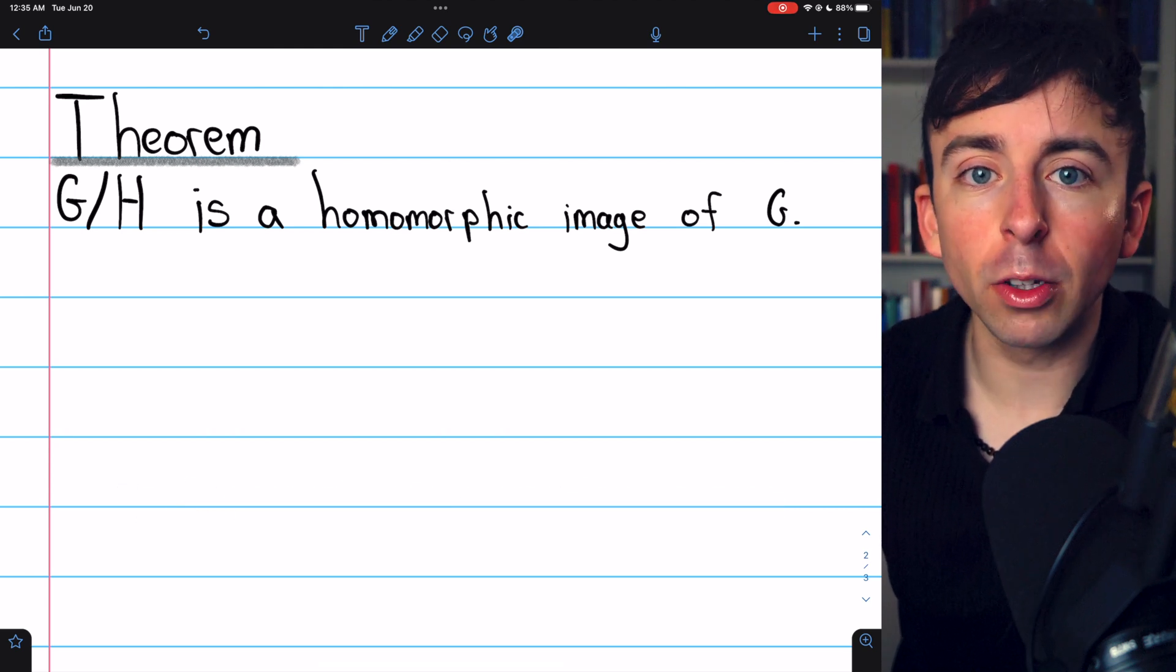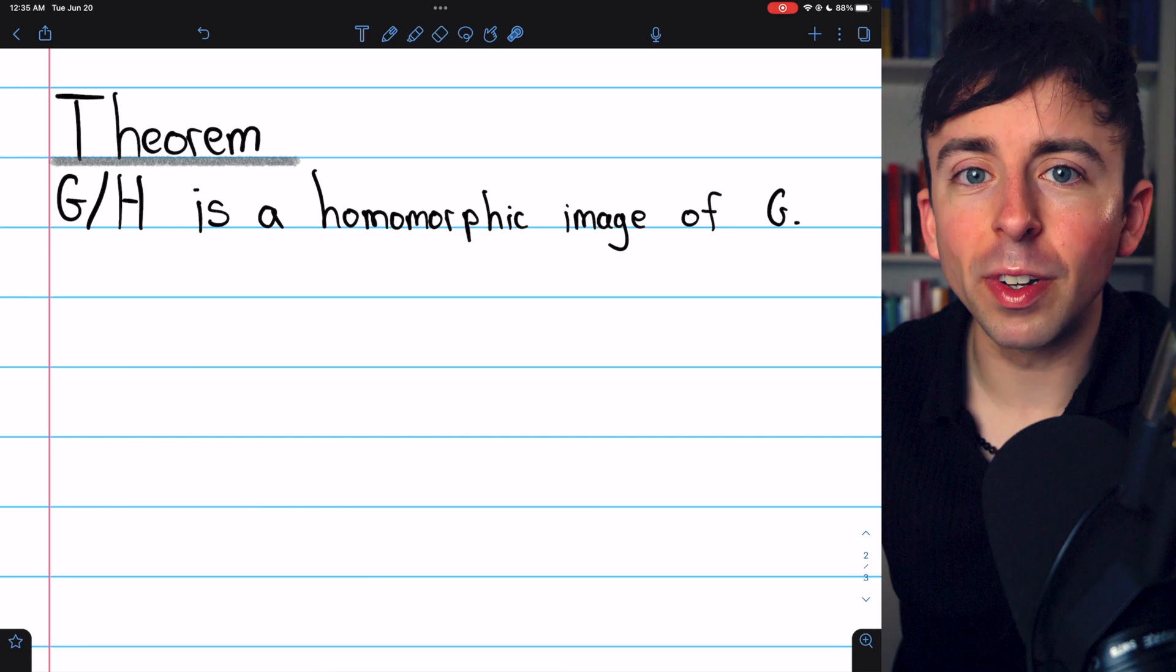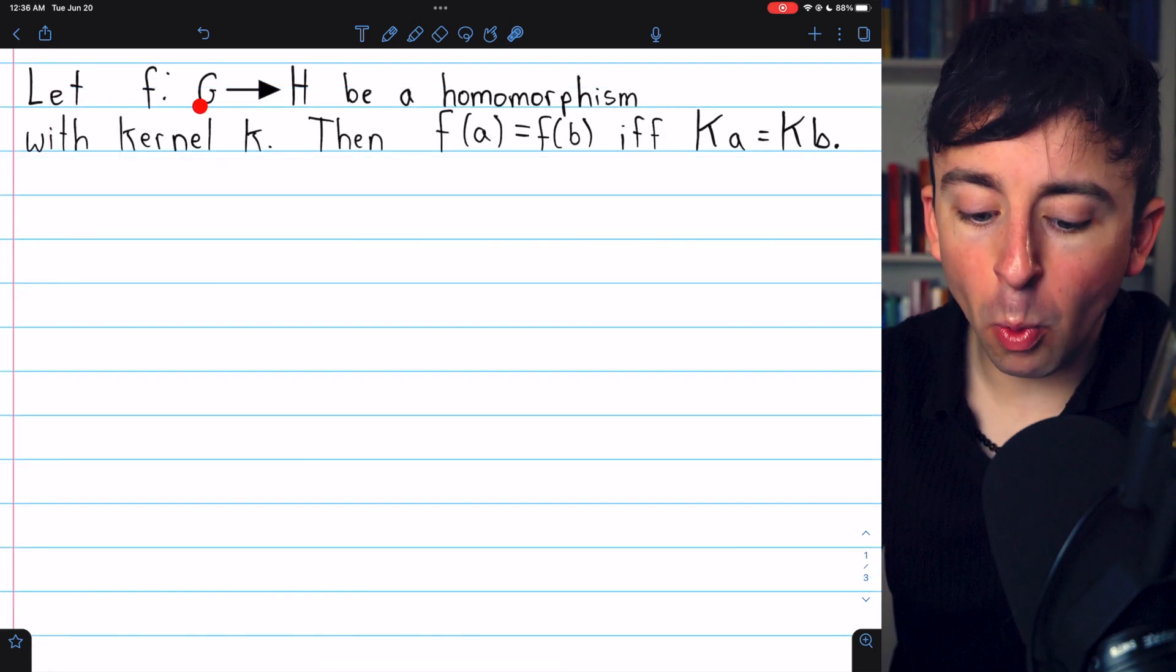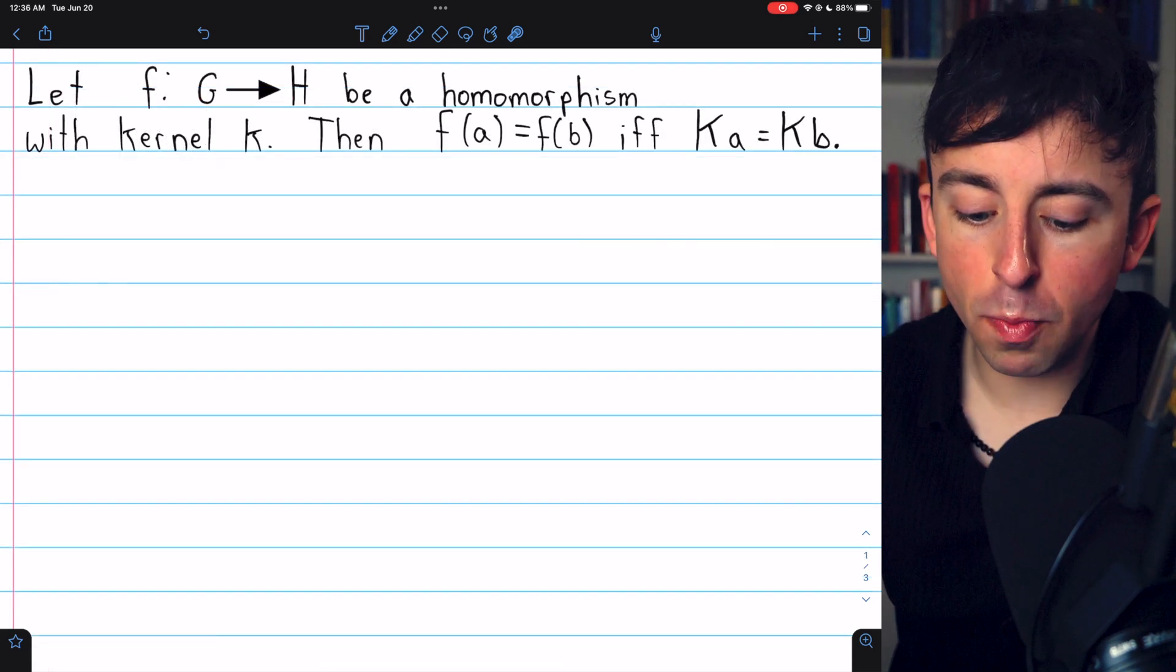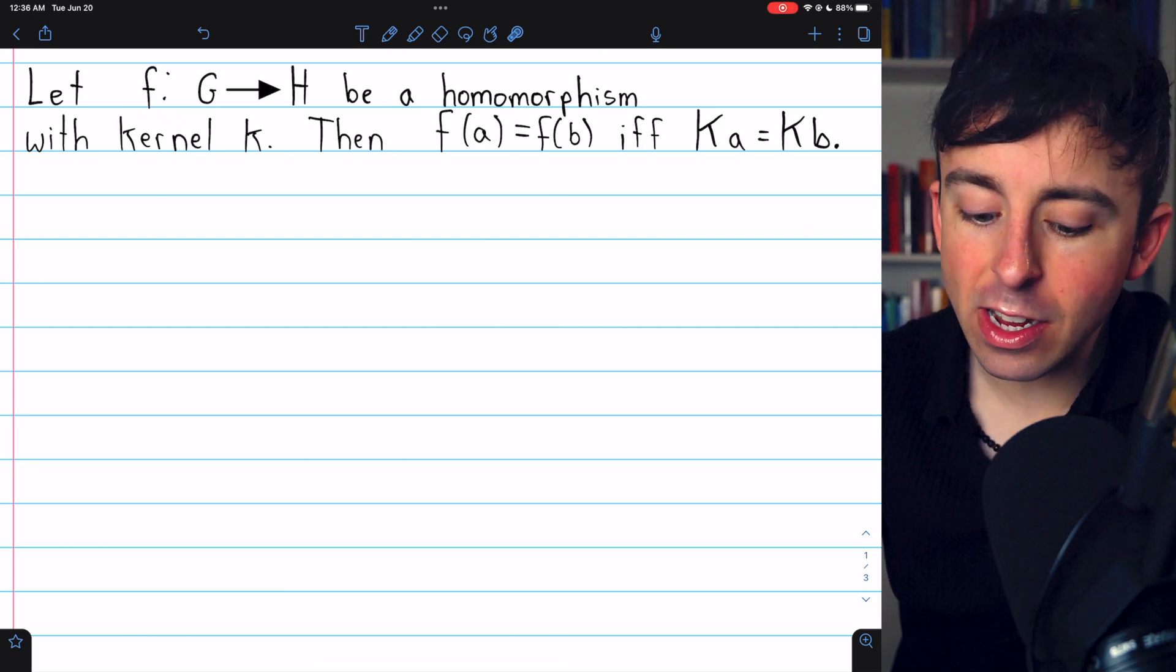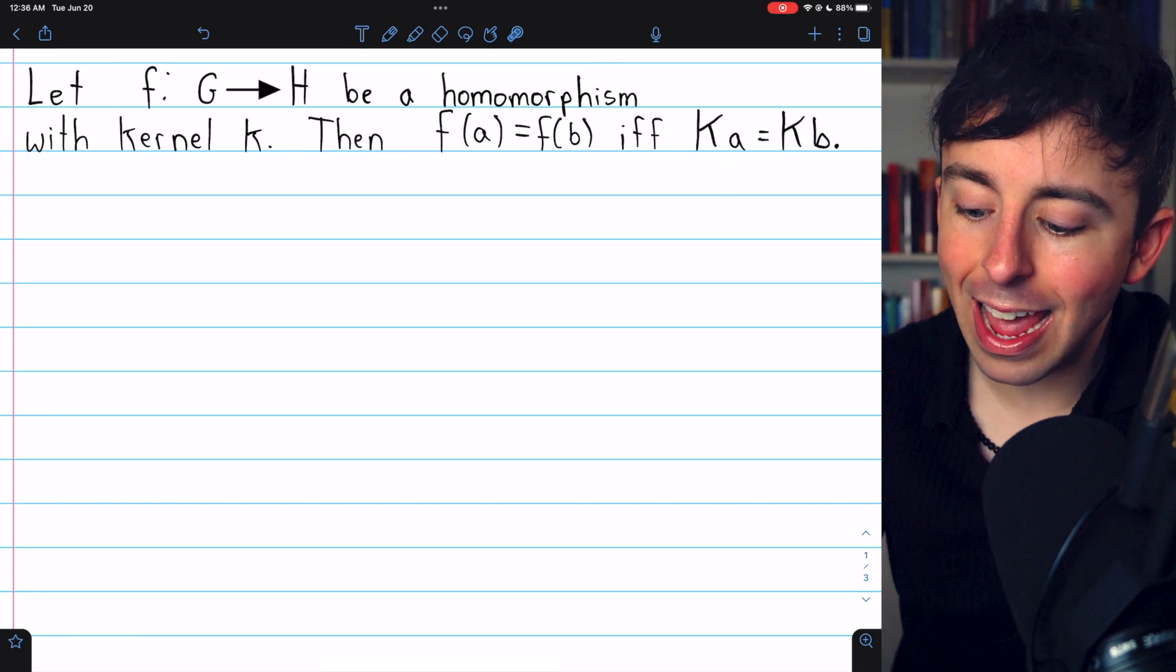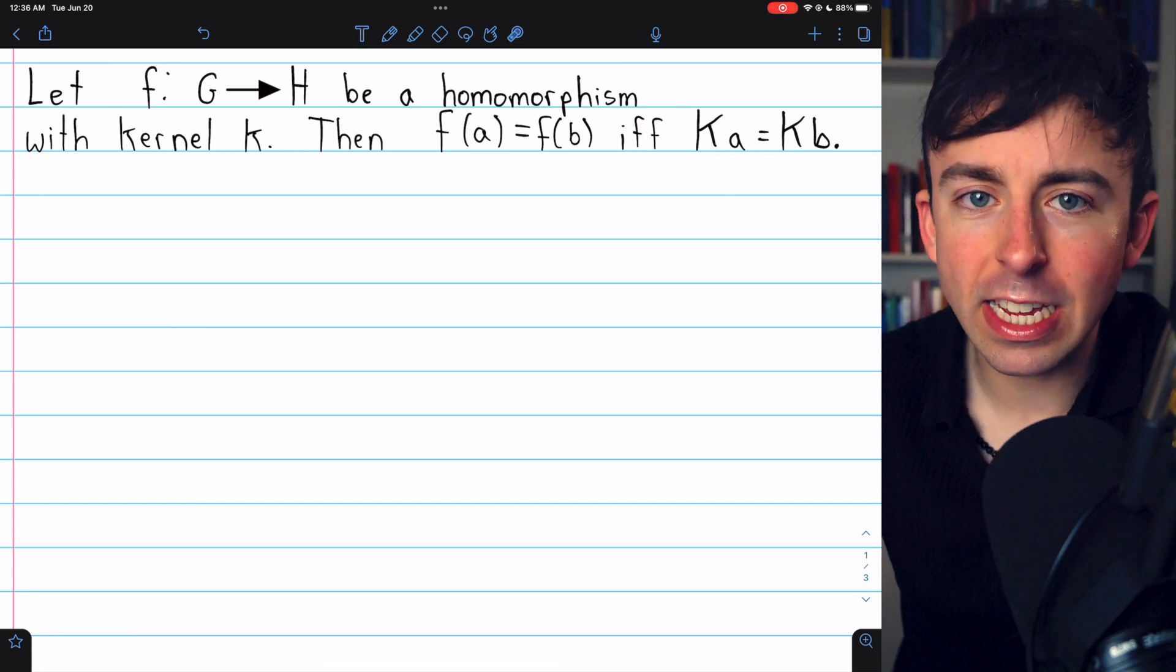Now, in order to prove the fundamental homomorphism theorem, we're going to need one more result, and that's what we're proving today. If F is a homomorphism from a group G to a group H with kernel K, then F(a) is equal to F(b) if and only if the cosets Ka and Kb are equal.